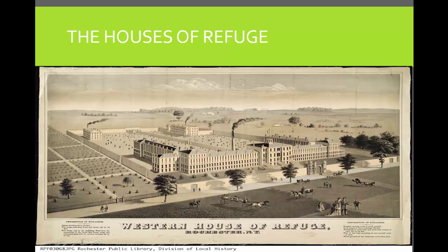Houses of refuge were the first specialized correctional institutions for dealing with youth in the United States. Children would be sent there and would stay until they aged out of the system. It was by no means a glamorous place to live — children would have the bare essentials and would learn to work hard for the rest. Children in houses of refuge engaged in daily regimens of hard work, military drills, and enforced silence, as well as religious and academic training. Everyone worked; it was essential to the reformation to become disciplined, hard-working, and able to follow the directions of those who ran these institutions.